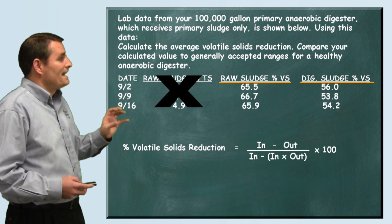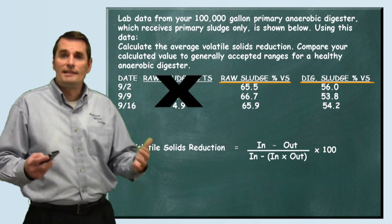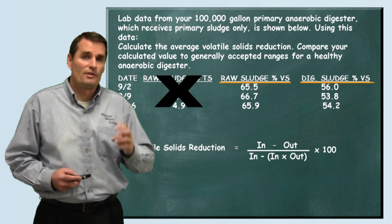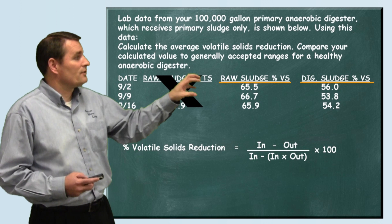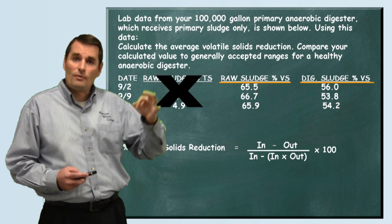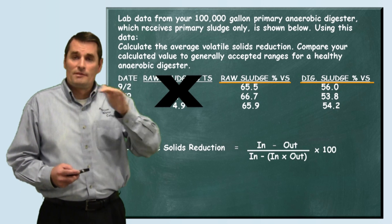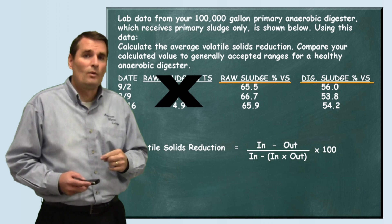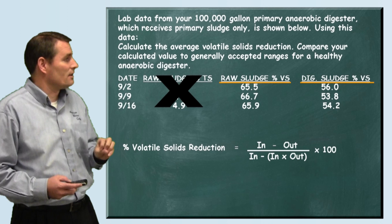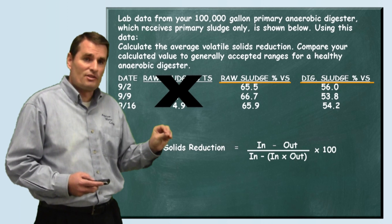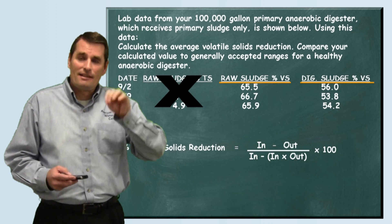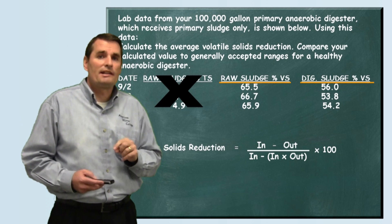We have three different dates with data, and we're supposed to calculate the average. There are a couple of ways to go about this. You could use the formula and calculate the percent reduction for each day, get three answers, add them up, and divide by three. But the easier approach is to just add your raw sludge percent volatile solids together to get that average, then add up the digested sludge values to get that average, and plug into the formula one time.